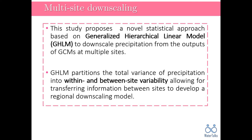One of the most remarkable characteristics of GHLM is the ability of the model to partition the total variance of the predictant or response variable of the model into different sources of variability. Therefore, GHLM can handle grouped data in which a predictant varies within and between groups. Owing to this property, we've built a multi-site downscaling model that can explain within-site and between-site variability of precipitation. In other words, the proposed model not only can explain the temporal variability of precipitation but can also explicitly and nicely explain the spatial variability of precipitation.